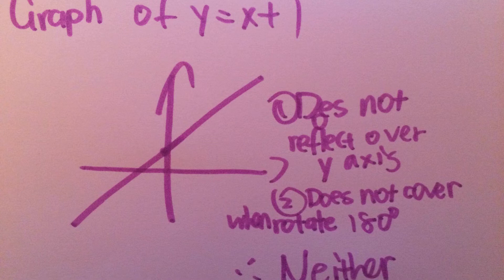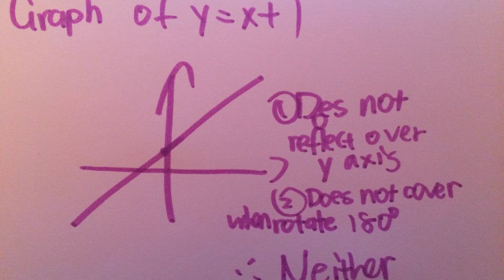We can also look at the graph of the function. The graph is on your screen right now. The graph does not reflect over the y-axis, because if we flip it over the y-axis they do not cover each other. Therefore it's not an even function. Also, if we separate the function over the y-axis and rotate one of the two parts 180 degrees in any direction, they do not cover each other either. Therefore the function is not odd. Since the function is neither even nor odd, the function is neither.